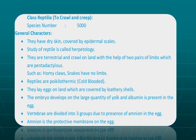Now let us move to class Reptilia. Reptilia means to crawl or creep. There are about 5,000 species of Reptilia. General characteristics: they have dry skin covered by epidermal scales. They are terrestrial, living on land, though some reptiles like crocodile, alligator, and tortoise are semi-aquatic.